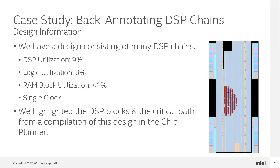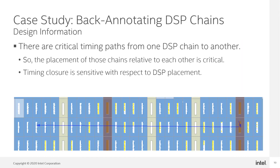We have a design that's heavily centered around DSP chains. It has only a single clock. We use the timing analyzer and chip planner to investigate our compilations for this design. We notice that there are critical timing paths between DSP chains. The placement of those chains relative to one another is absolutely critical to our design, making timing closure especially sensitive with respect to DSP placement.